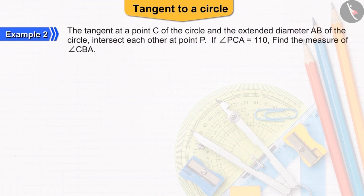Let us have a look at another example. The tangent at a point C of the circle and the extended diameter AB of the circle intersect each other at point P. If the measure of angle PCA is 110 degrees, find the measure of angle CBA. Pause the video to solve the question and then match your answer.